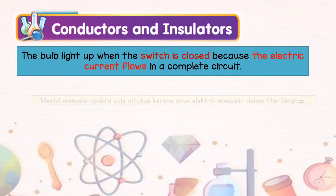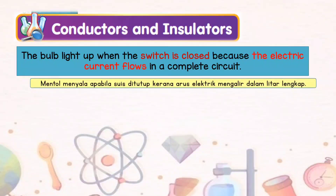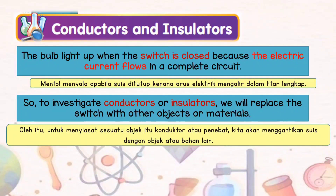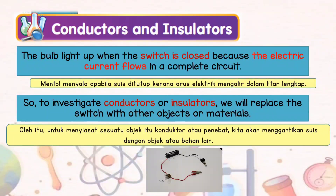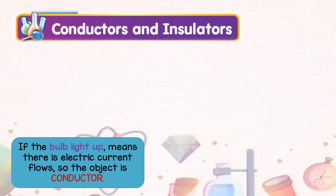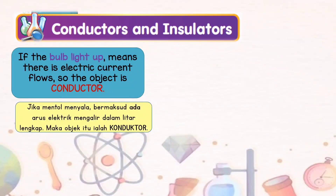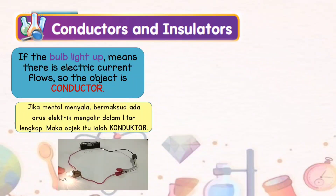The bulb lights up when the switch is closed because the electric current flows in a complete circuit. So, to investigate conductors or insulators, we will replace the switch with other objects or materials. If the bulb lights up, it means there is electric current flowing, so the object is a conductor.